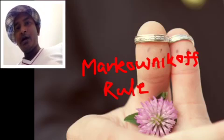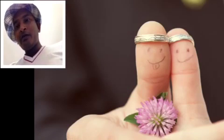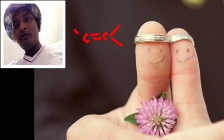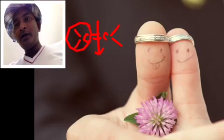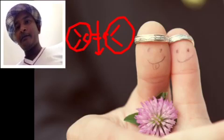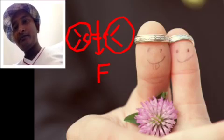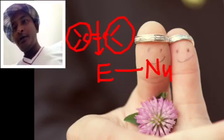The reagent is also unsymmetrical in nature. This rule states that when you have an unsymmetrical alkene — unsymmetry means when you break the carbon-carbon double bond from the center, this particular part and this particular part must be different. If both parts are different, then the molecule is called unsymmetrical in nature.